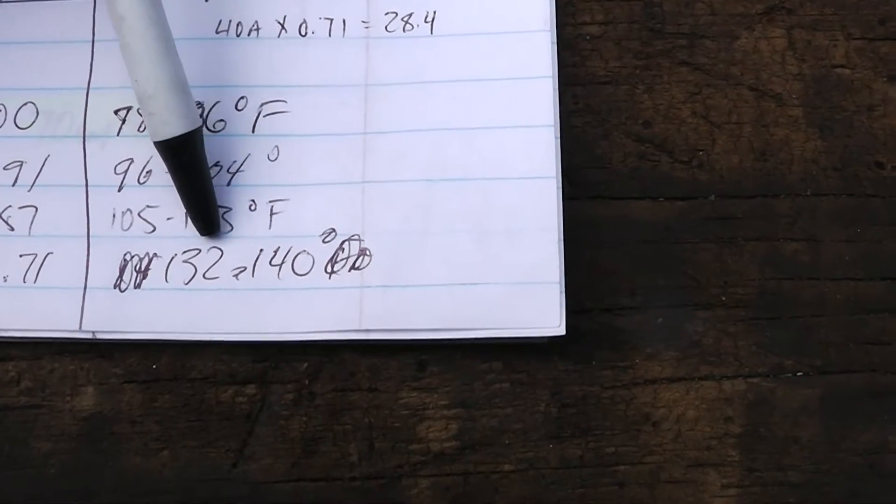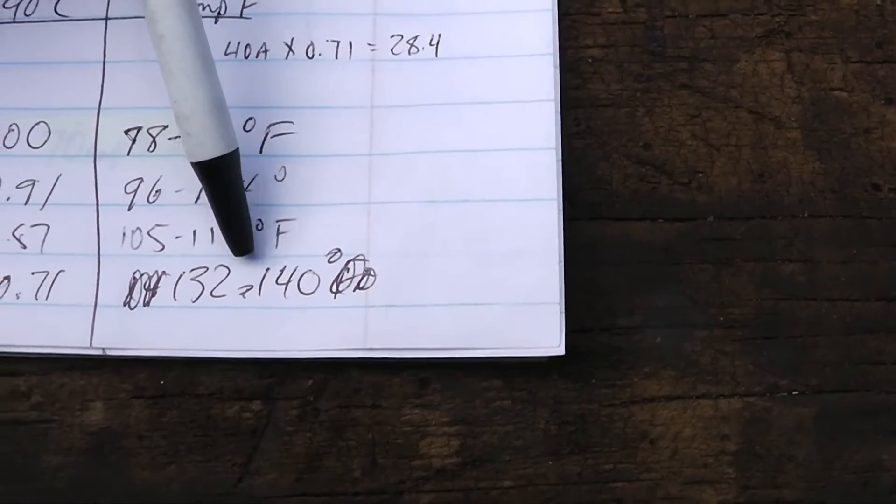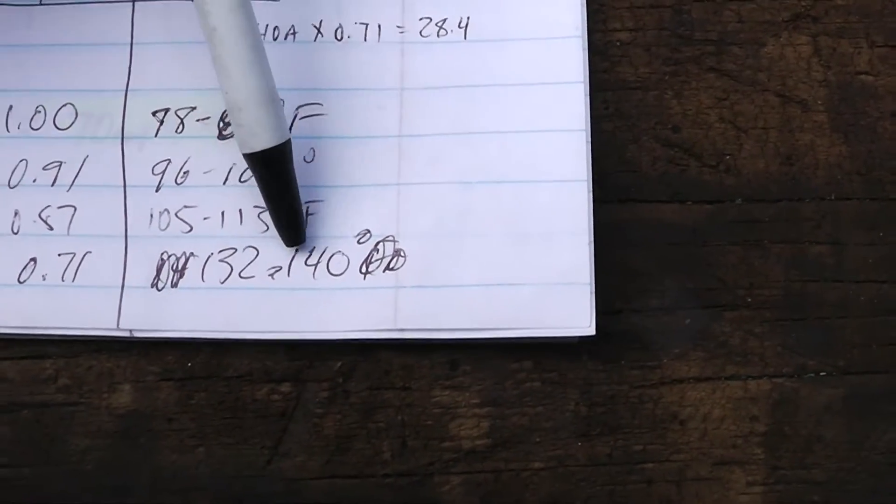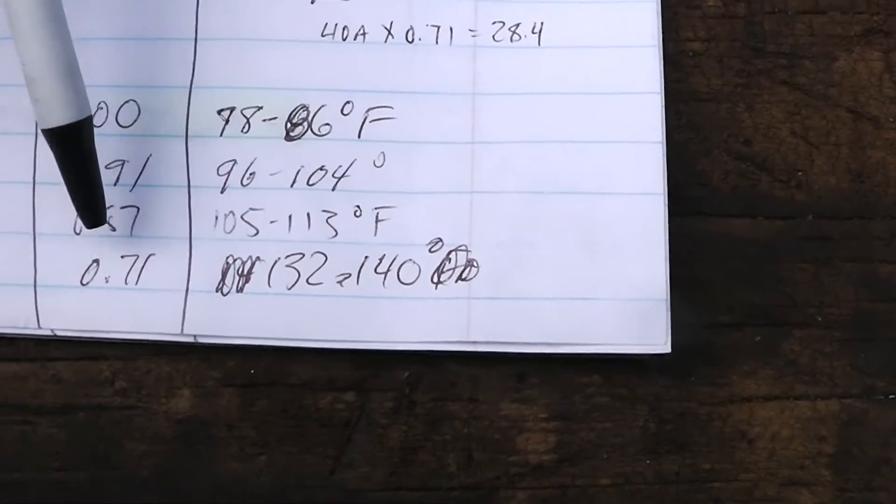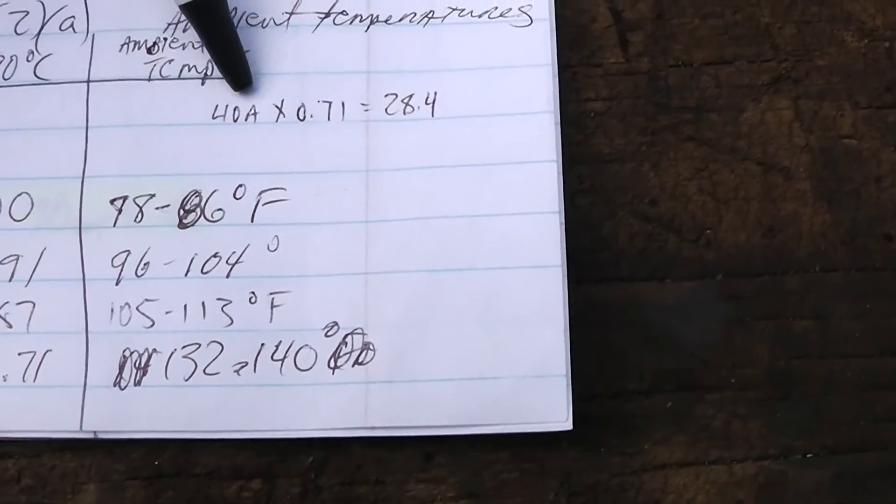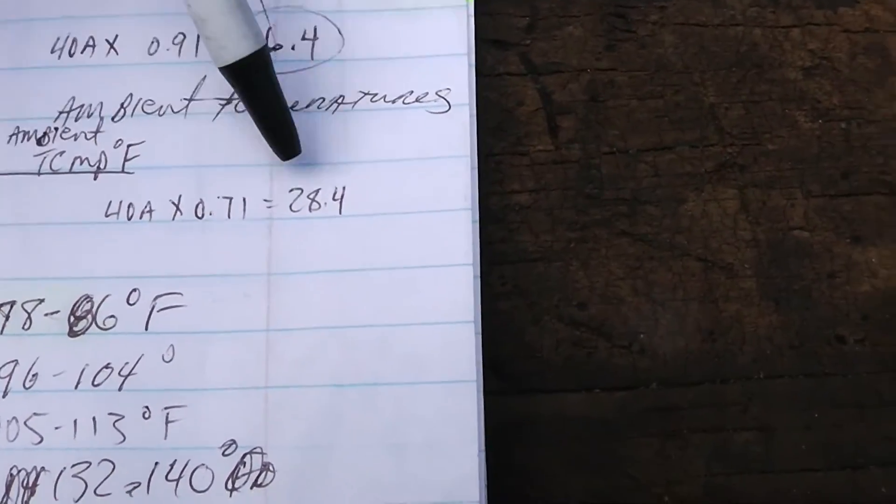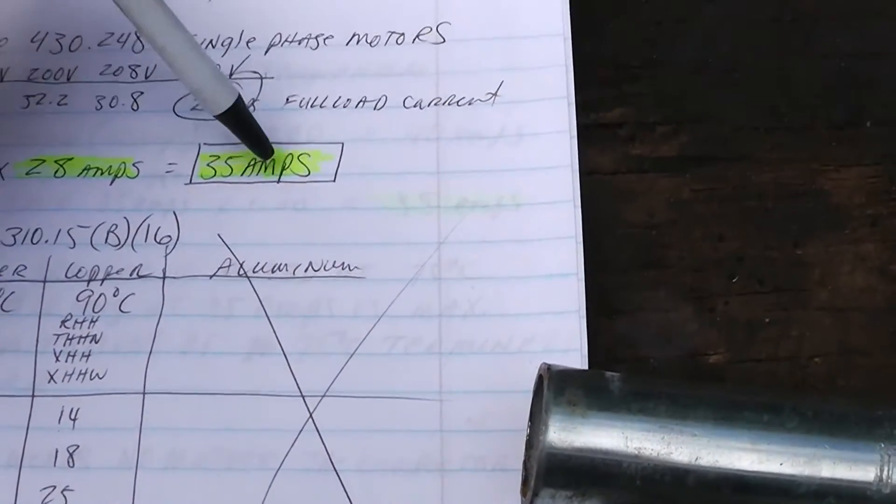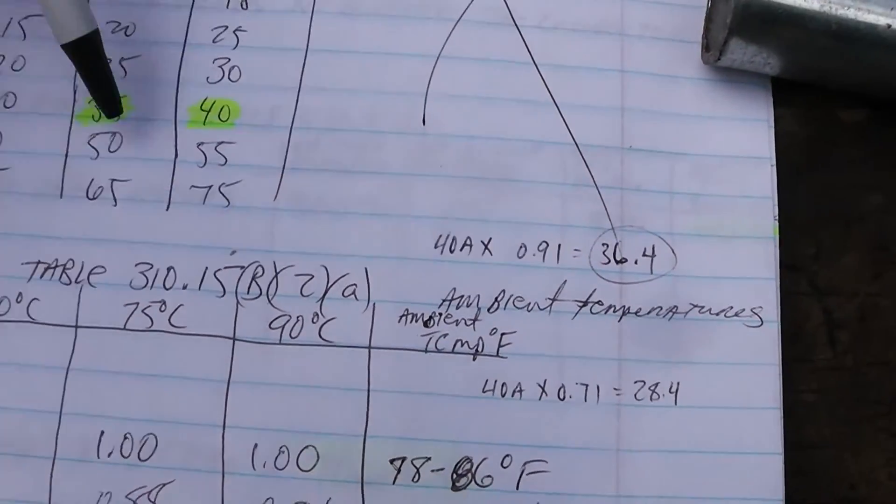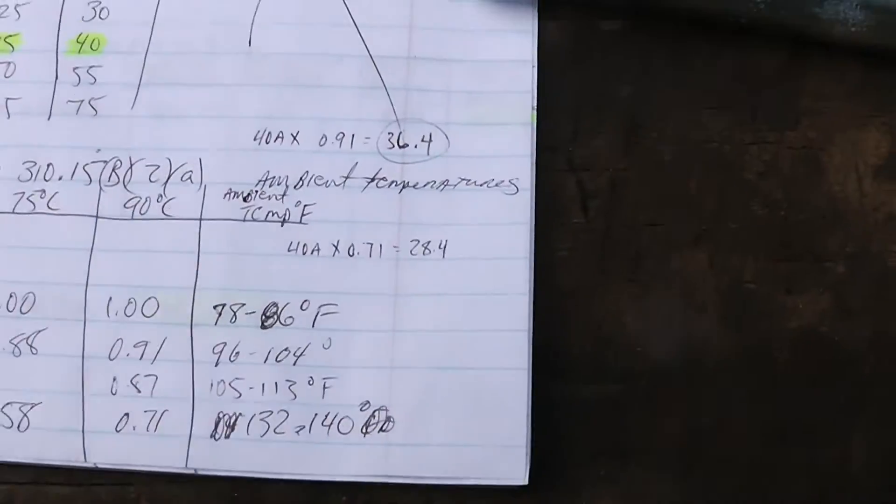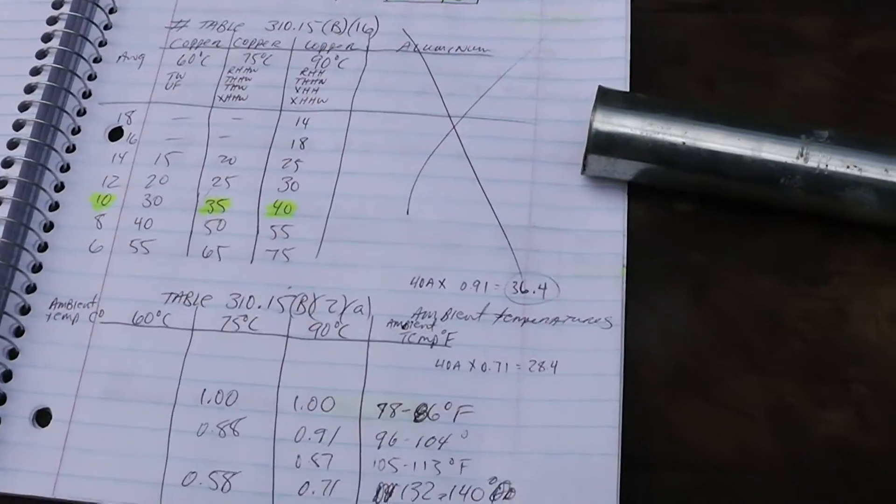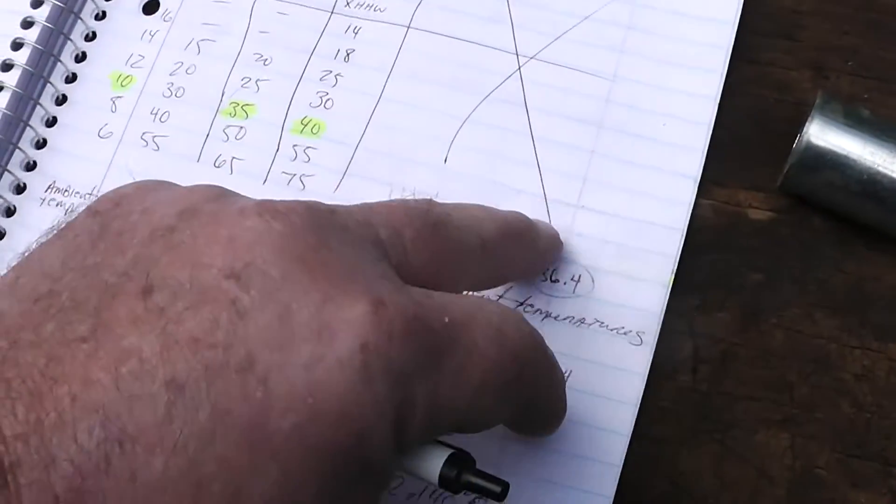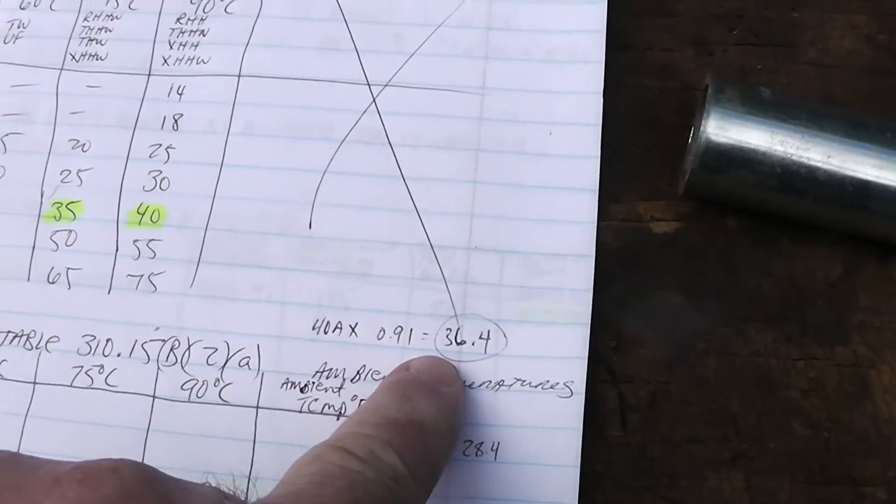If you're somewhere like Death Valley and you're in this ambient temperature range, you take that multiplier and multiply by the 40, and that gives you 28.4, which does not work. You have to bump the wire size up to a number 8 or number 6. So a number 10 at this temperature is going to work.